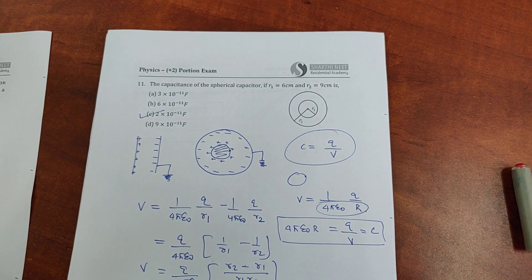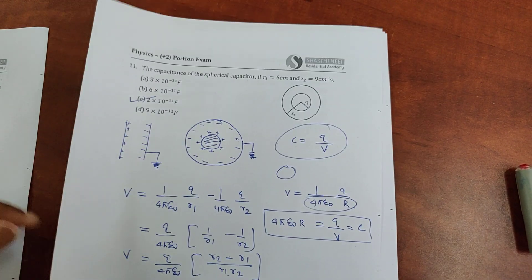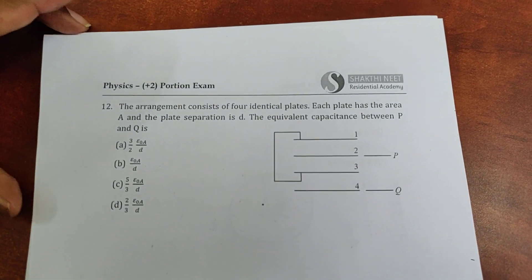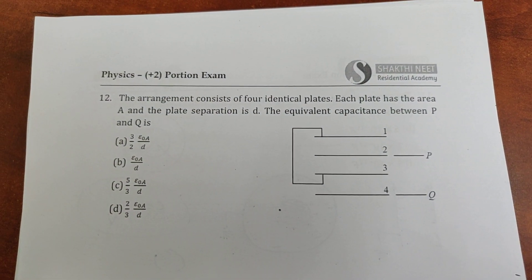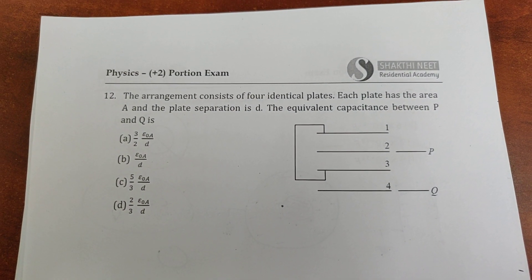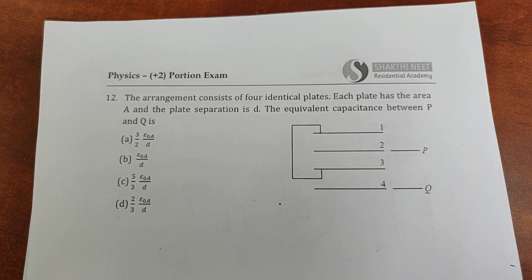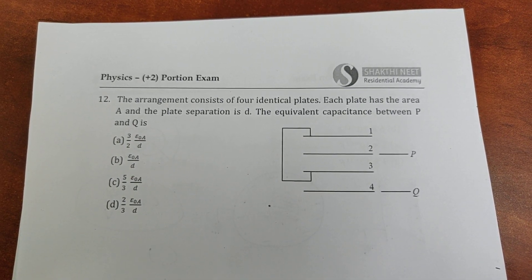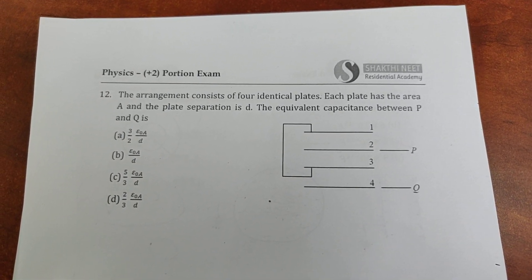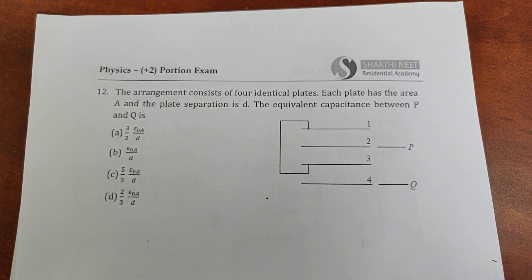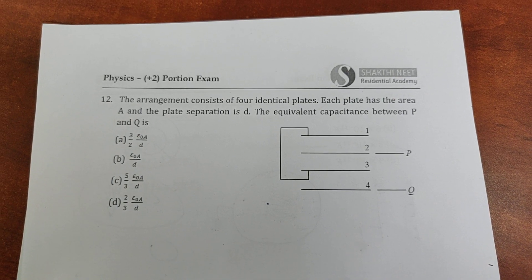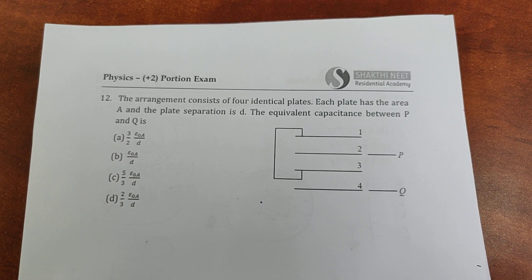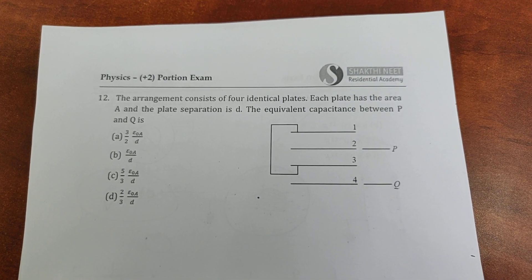Now let us move on to the next question of this video. Look at this arrangement of plates which gives capacitance. All the plates have equal area A and are equally separated with plate separation D. The question is: what is the capacitance between P and Q?